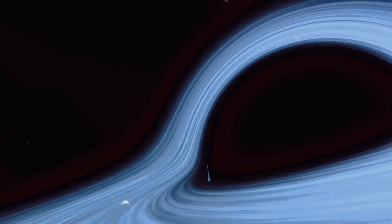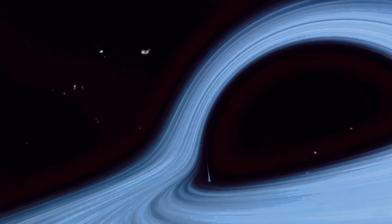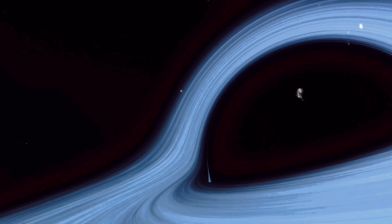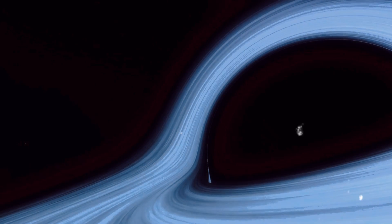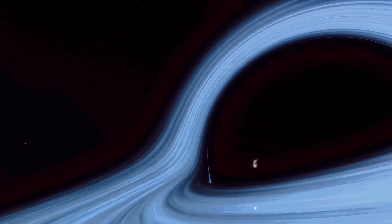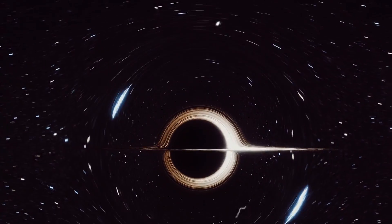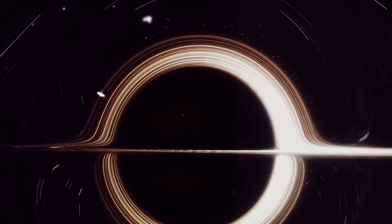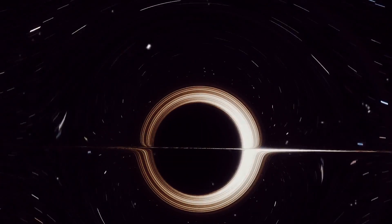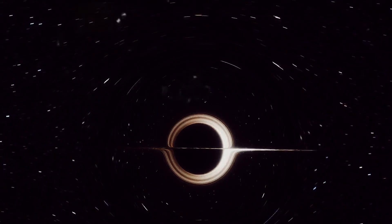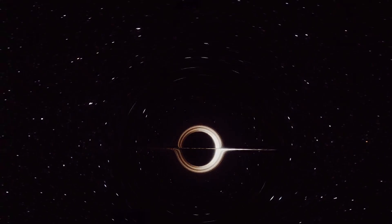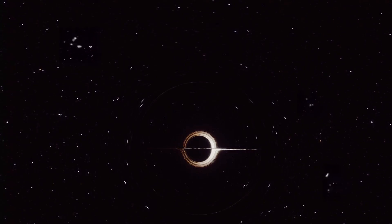The black hole's immense gravity is a double-edged sword. On one hand, it keeps Planet in its orbit, preventing it from drifting into the cosmic void. On the other hand, it threatens to rip the planet apart through a process called spaghettification. Yes, it's as terrifying as it sounds. Objects closer to the black hole get stretched into long, thin shapes, like strands of spaghetti, hence the name.